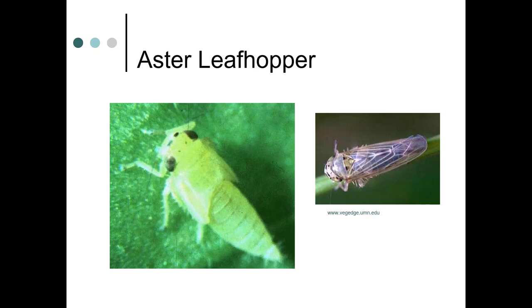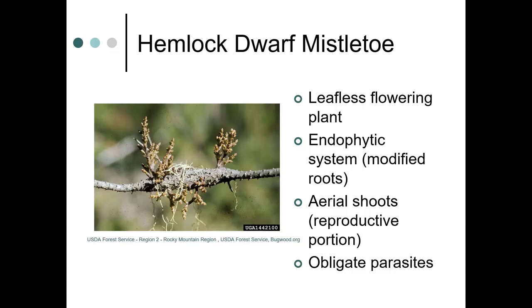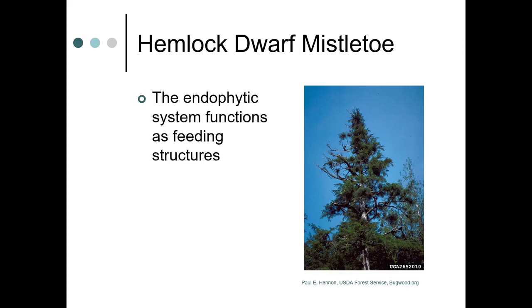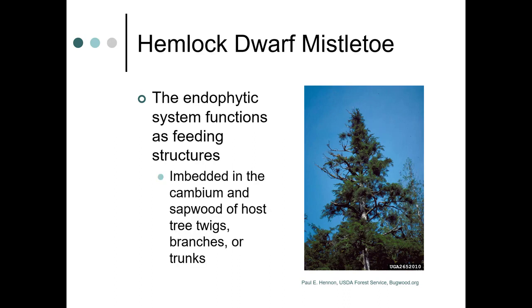Now, mistletoe. Hemlock dwarf mistletoe is a leafless flowering plant with an endophytic system made up of modified roots. The aerial shoots are the reproductive portion. Endophytic means inside. They are obligate parasites, meaning they need something to parasitize. The endophytic system functions as feeding structures, and they embed in the cambium and sapwood of a host tree's twigs, branches, or trunks.